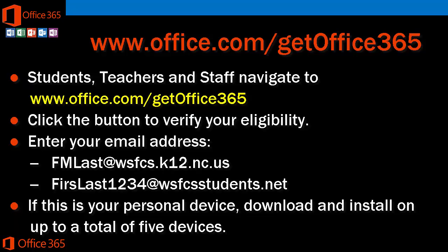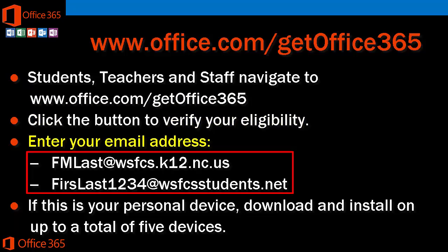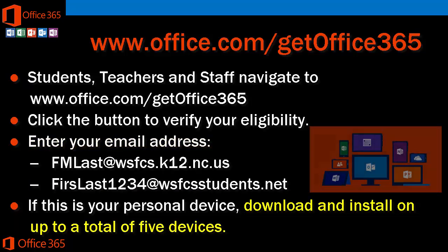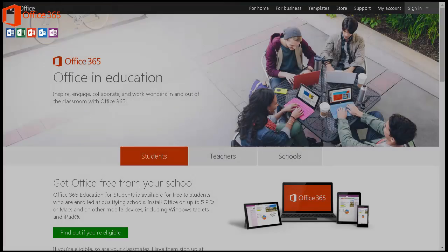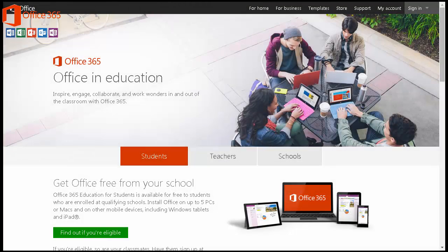Students, teachers, and staff will all surf to the same site: www.office.com/get-office-365. You then click on the button to verify your eligibility, which will prompt you for your email address. If you're a staff member or teacher, enter your standard email address; if you're a student, use your Winston-Salem email address. You can then download and install on up to five different devices.